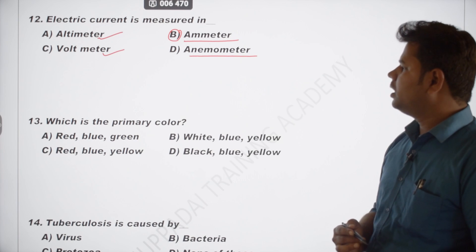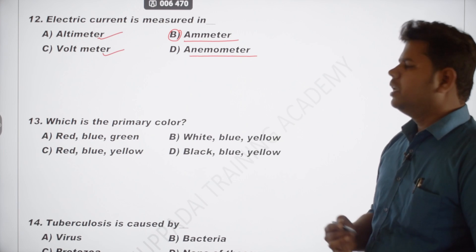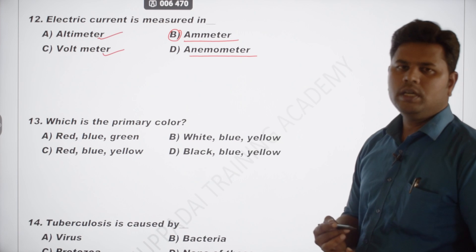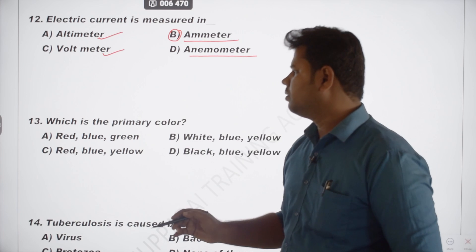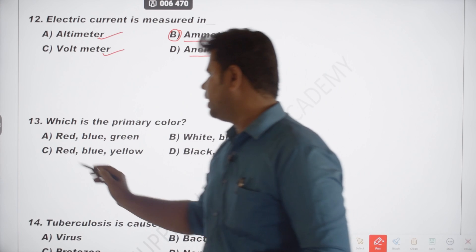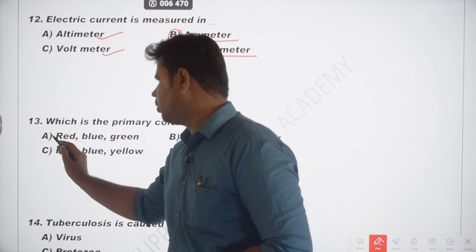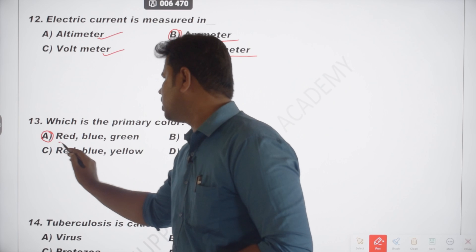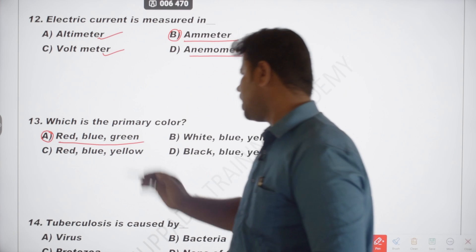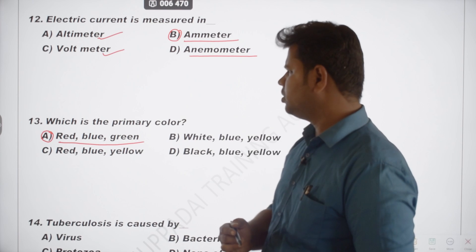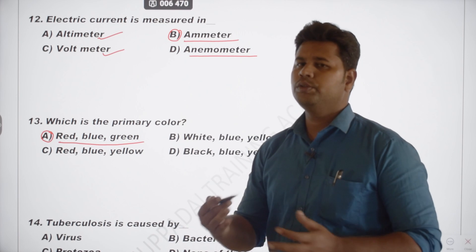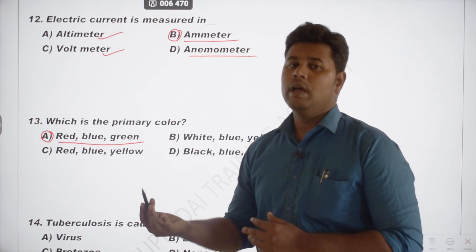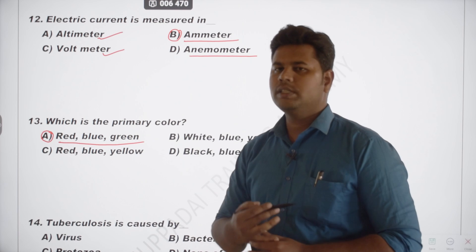The 13th question: which are the primary colors? The answer is red, blue, and green. These are the three main primary colors.